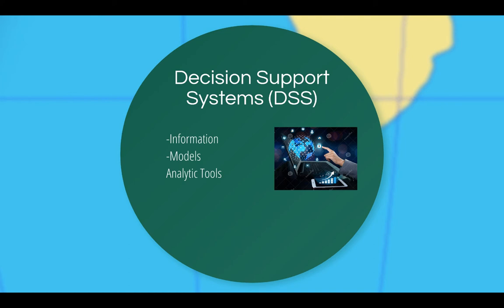Decision support systems, or DSS, help people make decisions by providing information, models, or analysis tools. Specific uses of DSS in logistics include vehicle routing issues, inventory control decisions, developing automatic order picking systems, optimization models for buyer-seller negotiations, logistics simulations, and data mining.